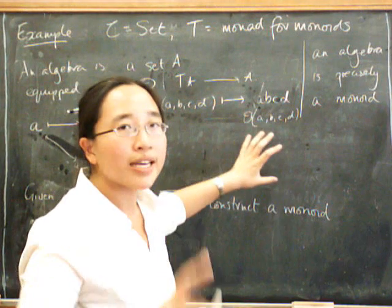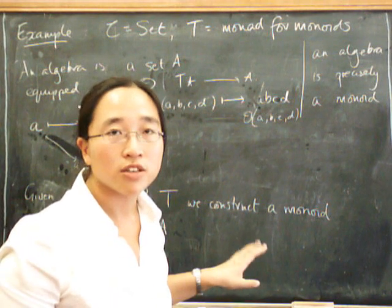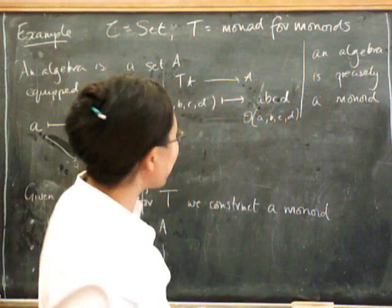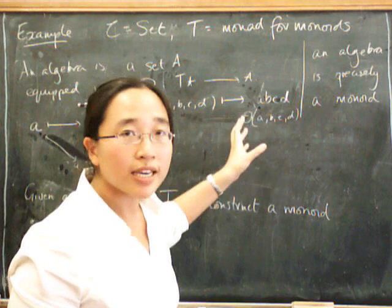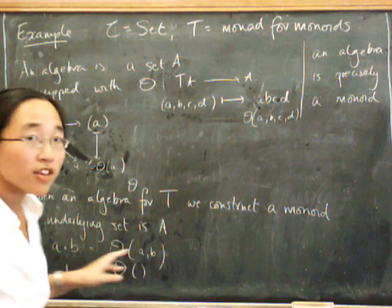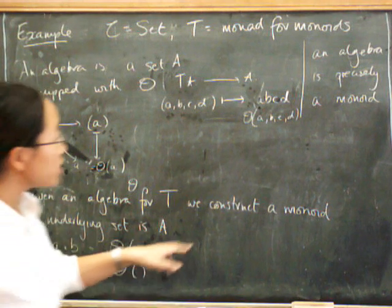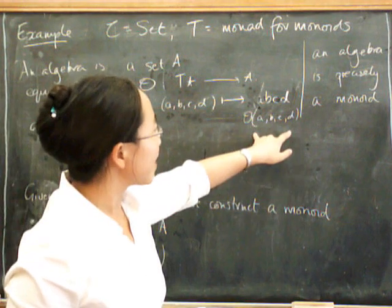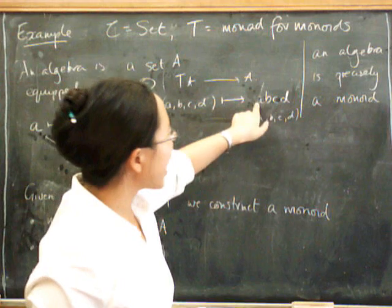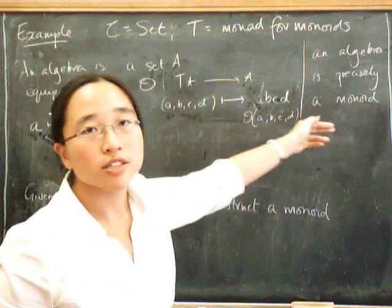And here's the interesting point: if we didn't want it to be associative or unital, we could change T and have a perfectly good T giving a set with a binary operation that was neither unital nor associative. Now, in our definition of T, we built in the fact that it was associative because we gave not just binary operations, but we gave n-ary operations for all n.